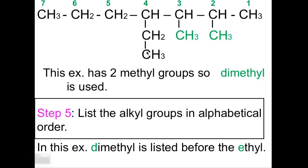And when we do it, we're going to list the alkyl groups in alphabetical order. So in this example, dimethyl is going to be listed before the ethyl group.